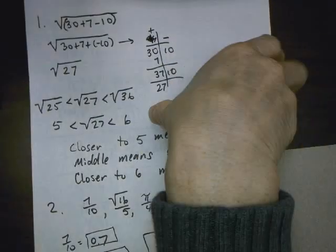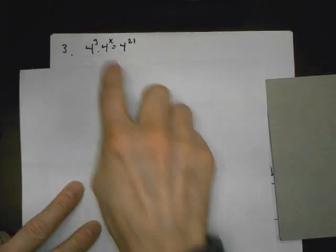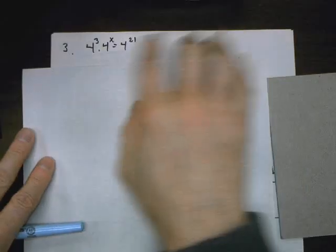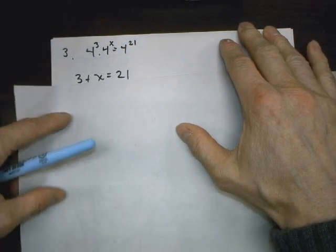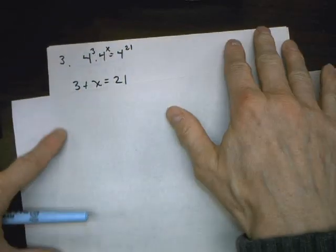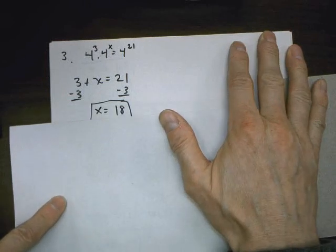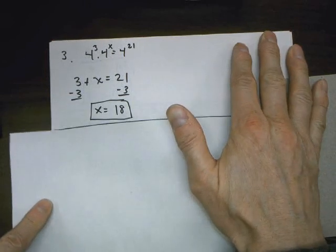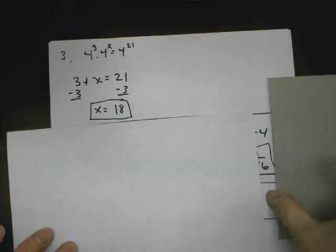Number 3 says: enter the value for x. We're multiplying powers with the same base, so we copy the base and add the exponents. This question is asking: 3 plus what equals 21? I solve that equation — take 21, subtract 3, and x has to be 18. 3 plus 18 is 21.